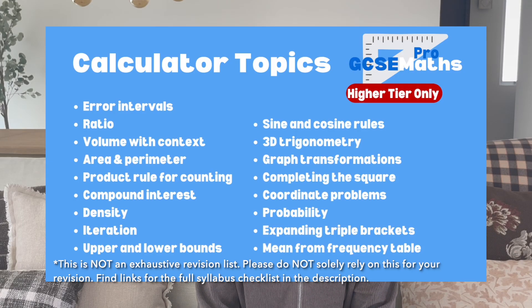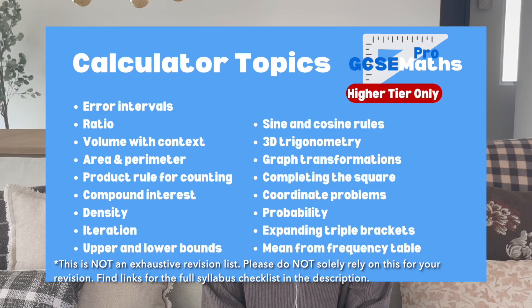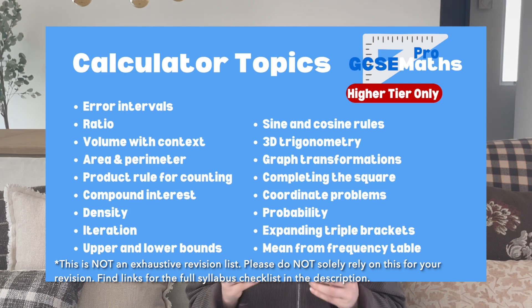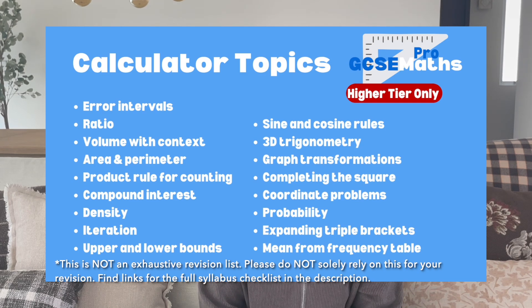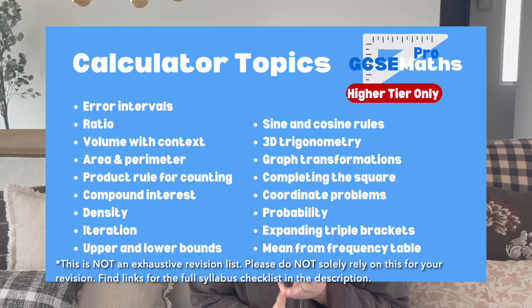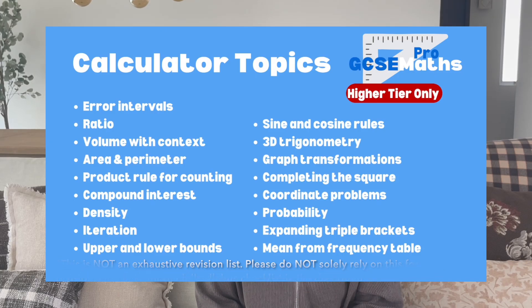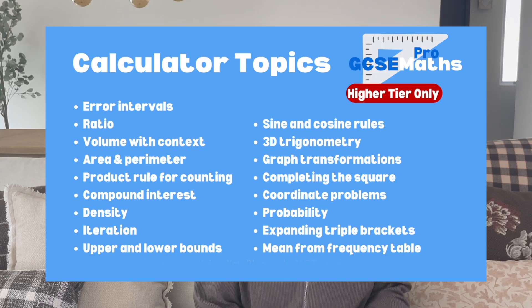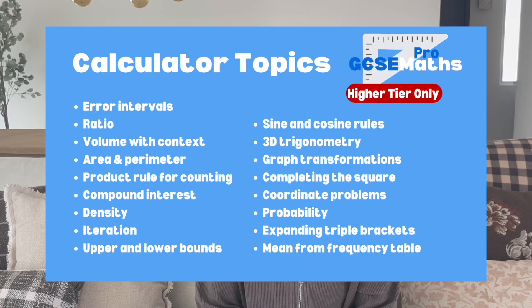Iteration is a really key one for calculator papers because there are always lots of decimals, and the same with upper and lower bounds — particularly when they ask you to do calculations using multiple different bounds with multiple decimal places. Obviously sine rule, cosine rule, and the trigonometric area of a triangle are likely to appear at some point. Completing the square isn't necessarily calculator-paper-specific, but since we didn't see it in Paper 1, I'm going to assume it'll come up in Paper 2 or Paper 3.